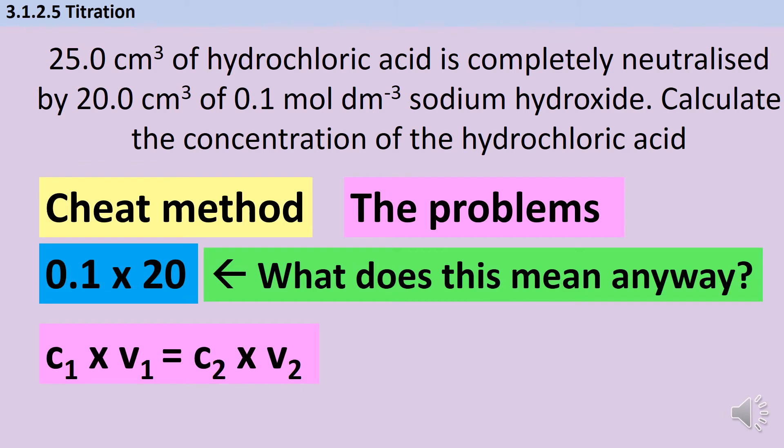Now the second problem with this method is slightly harder to get around, and it's the reason that the method is not always appropriate to use. We've said that C₁ times V₁ is C₂ times V₂, but why? Why should those two numbers be the same as each other? What is it that we're actually working out? Well, we've just established that when we multiply together a concentration and a volume, what we're doing is calculating the number of moles. So why is it that the number of moles of one reactant should be the number of moles of the other reactant?